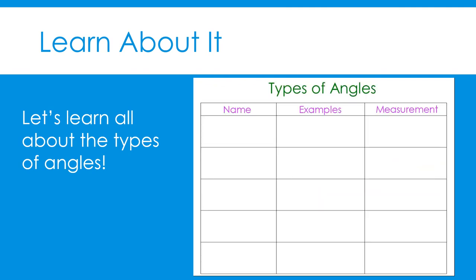We can classify or sort angles into different categories based on the measurement of the angle. Let's learn about each type. The first type of angle is called a zero angle. Zero angles look like this — you can see that the two rays are not open or rotated at all, but are rather laid on top of each other. Zero angles have a measure of zero degrees. That little sign means degrees.